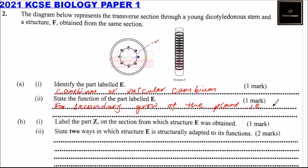That is, we can also call it increase in girth. So that's how you answer that. We look at part B: label the part Z on the section from which structure F was obtained. Structure F was obtained from here, it's xylem. So this is the part that we label Z.